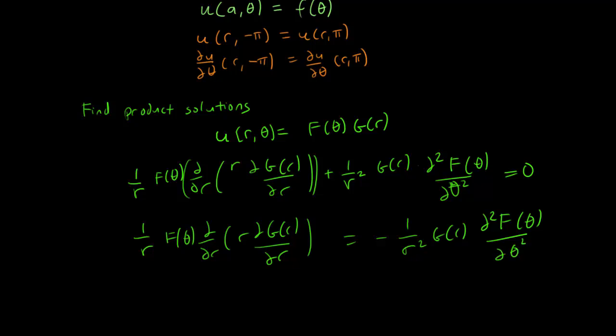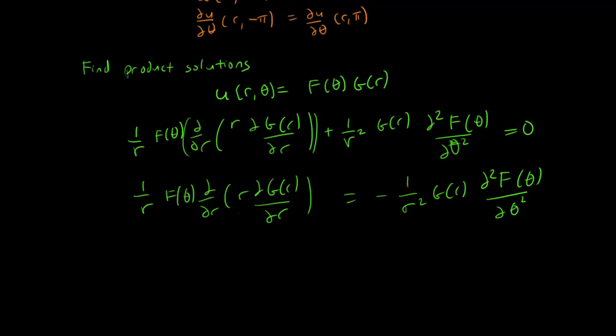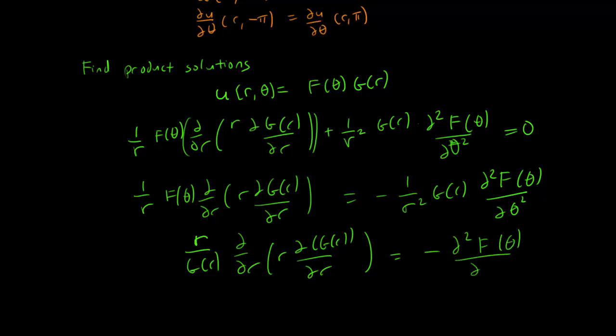This is equal to minus 1 over r squared g r partial squared f theta partial of theta squared. And now moving all the r terms to the left and the theta terms to the right, we get that r over g r, partial partial r, r partial g r, partial r is equal to minus second derivative of f theta, respect to theta times 1 over f theta.